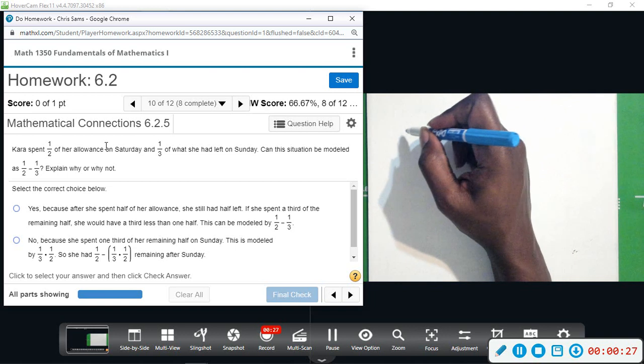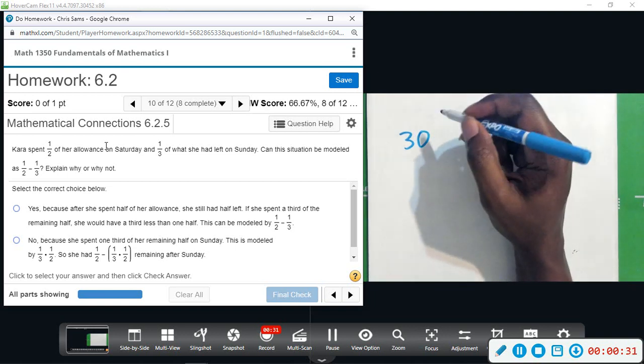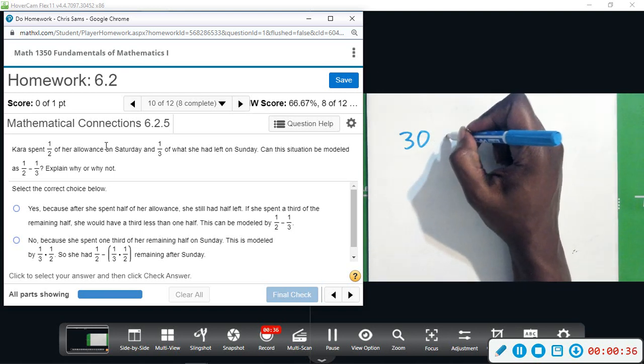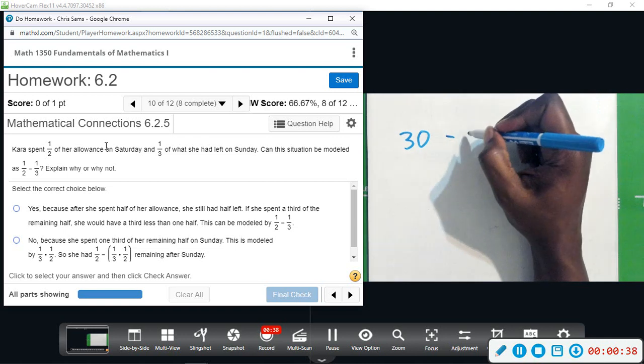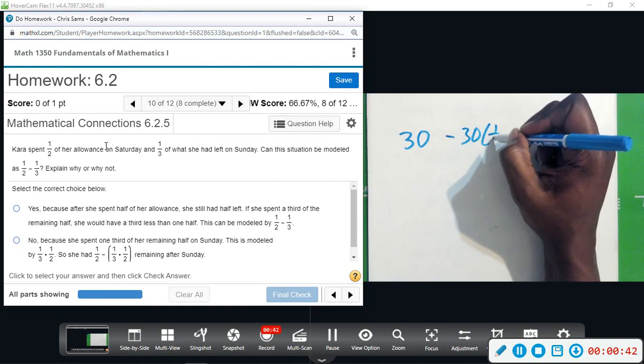say she had $30 just for example and she spent half of that, so she spent half of 30 which is 15.